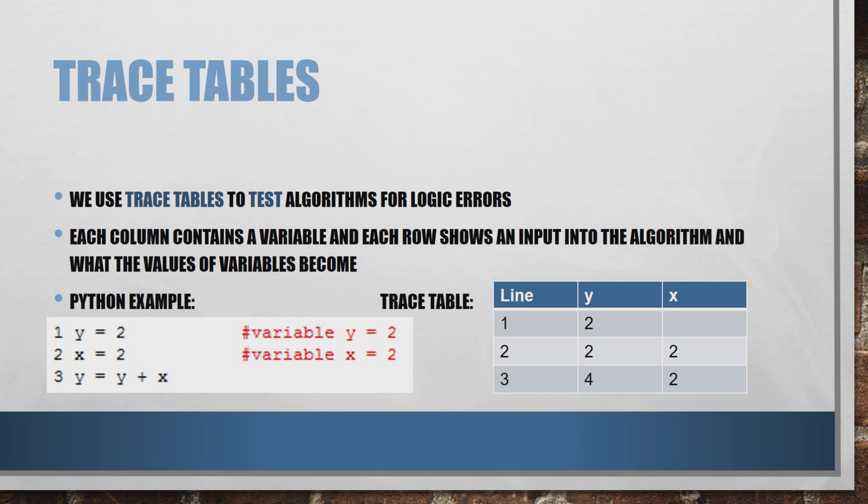On line 3, we set the value of y to equal the sum of y and x. So 2 plus 2, hopefully we all know that equals 4. So on line 3 of our trace table, the value of y becomes 4. The value of x hasn't changed - we didn't do anything to x in that example, so x is still valued at 2.